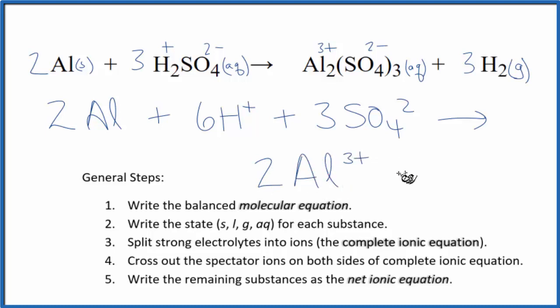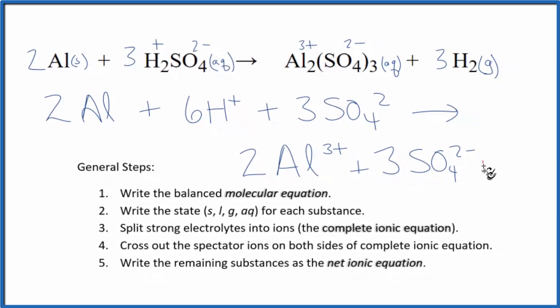Plus three sulfate ions. And then we have three H2, three hydrogen here. We do not split these gases apart, so plus three H2. So this is the complete or total ionic equation.